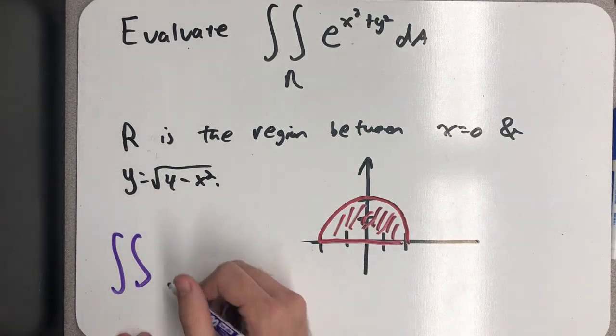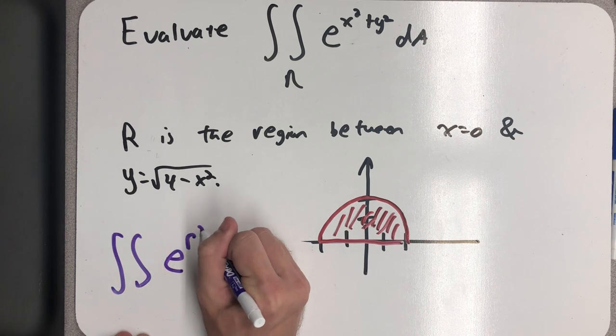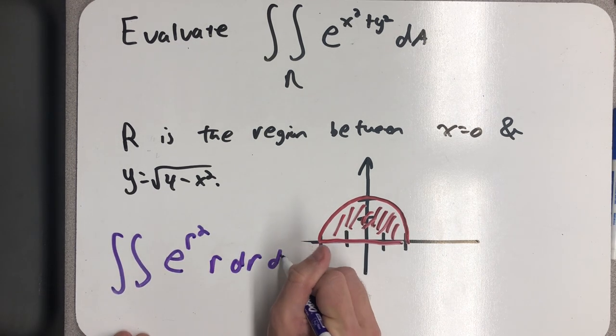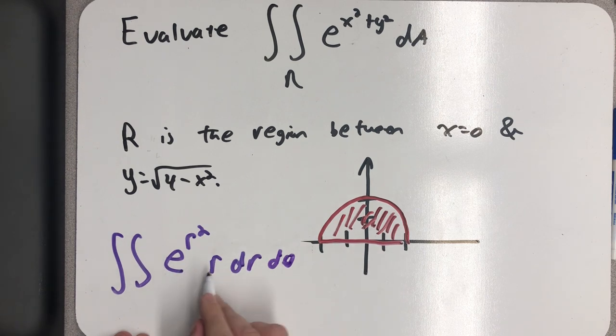First up, I know that x squared plus y squared is simply R squared. dA is R dR d theta, and that solves some problems for me. I now see an integration technique. Plus, the bounds are really easy to find.